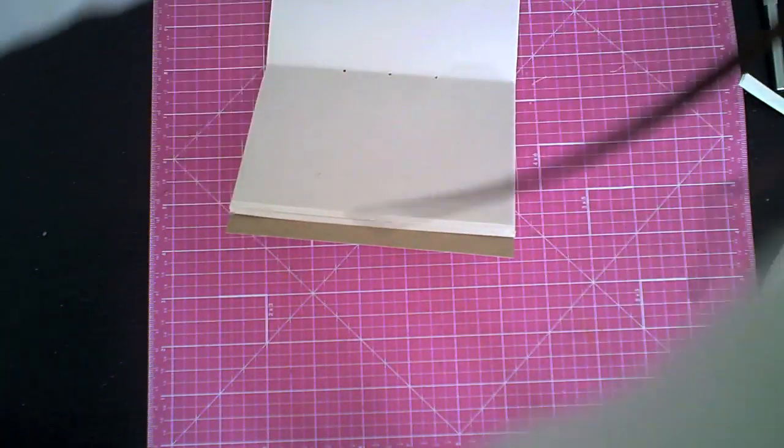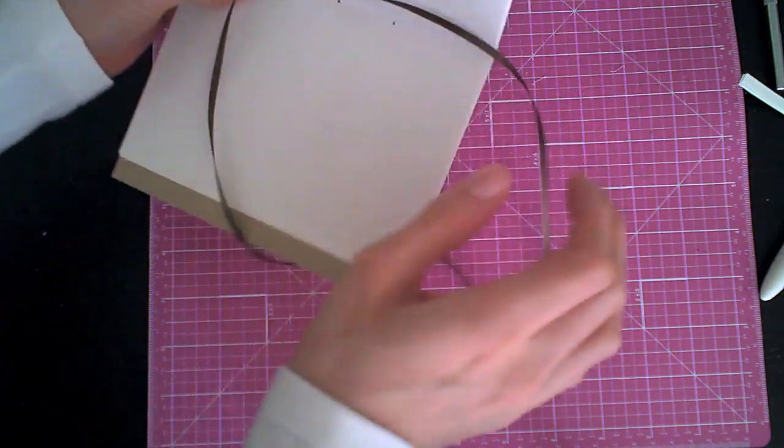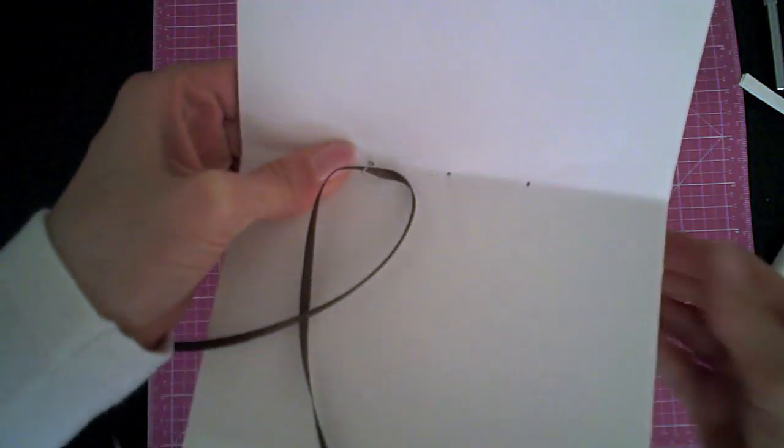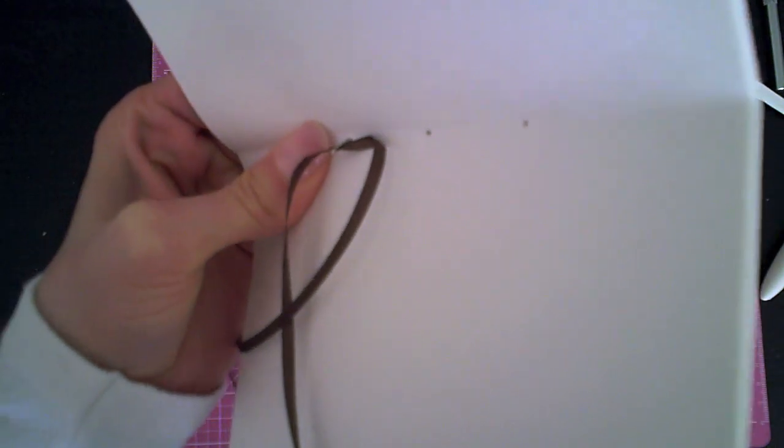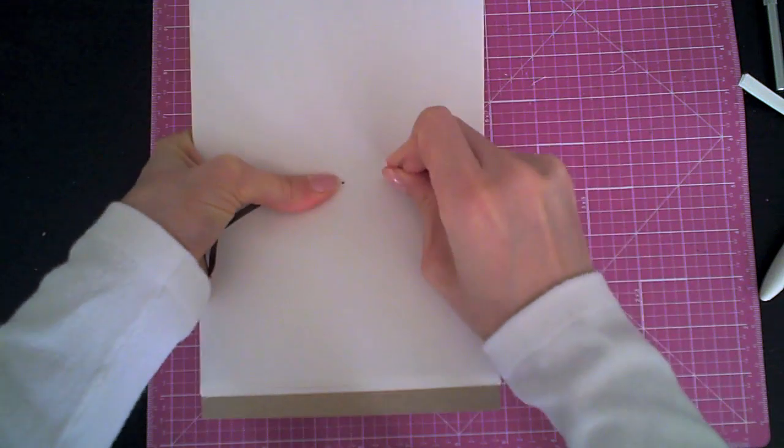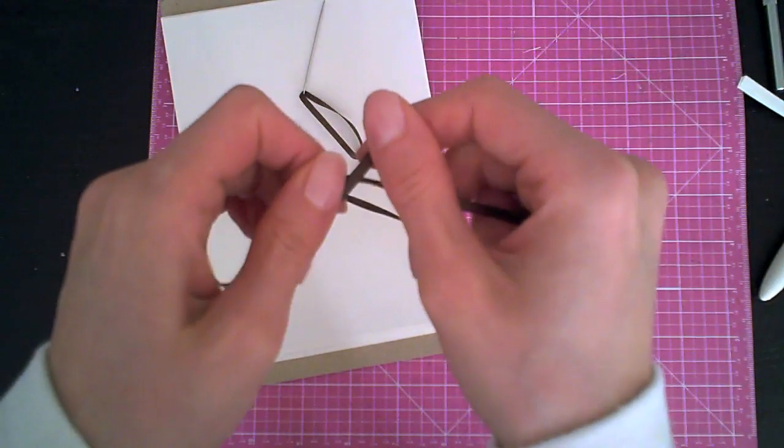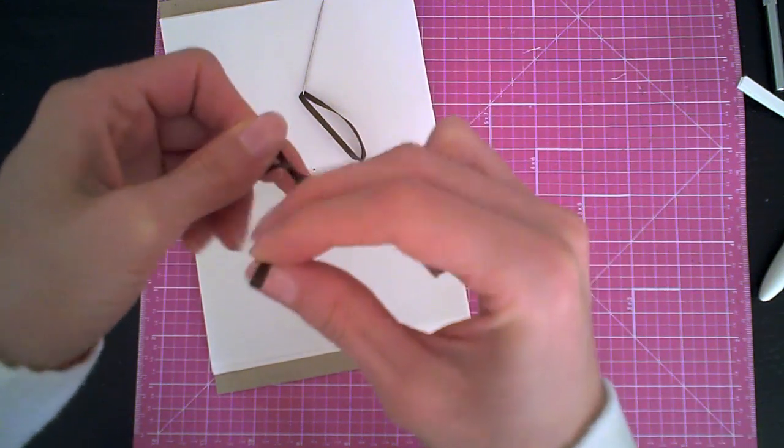And then I start by going through one of the holes at the edge that is closer to the edge and then back through the opposite hole. At the moment the middle hole is still empty.